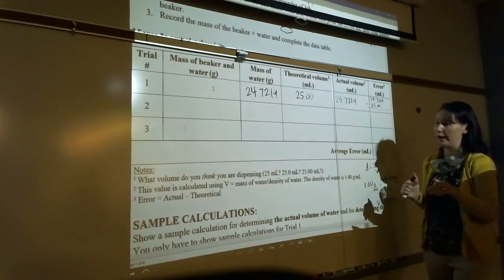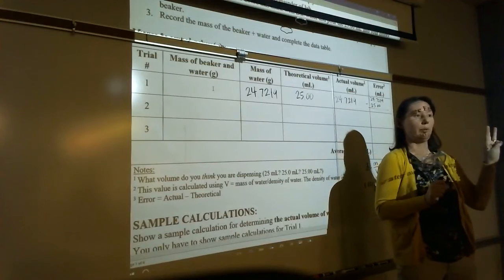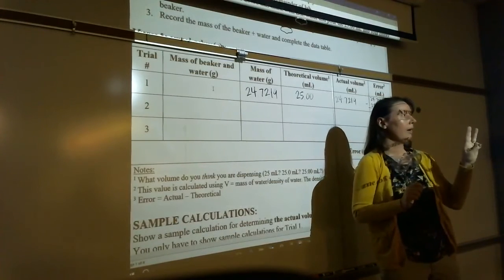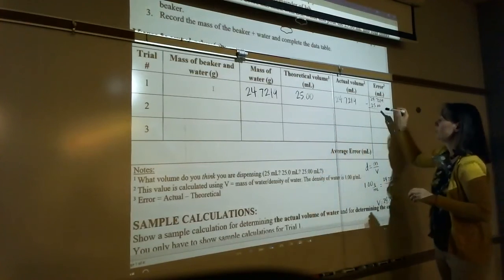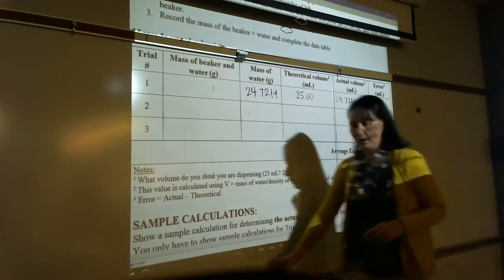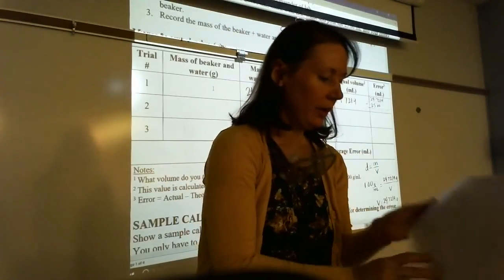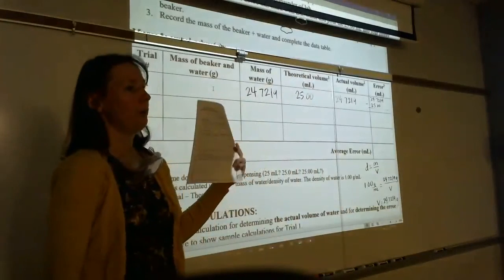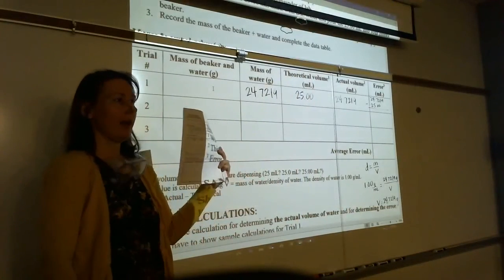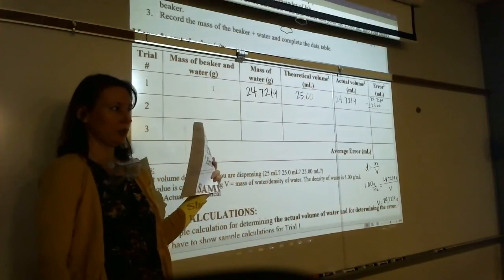You're going to do it with the burette. You're going to do it with the graduated cylinder. And you're going to do it with a plain old beaker. And then you're going to calculate your error. Calculate an average error. And then on your back, you've got questions. So does everybody understand the purpose of the experiment and what you're doing in the experiment? Any questions on that part?